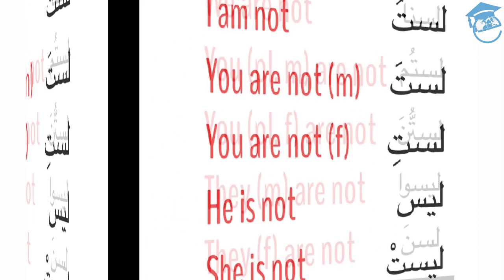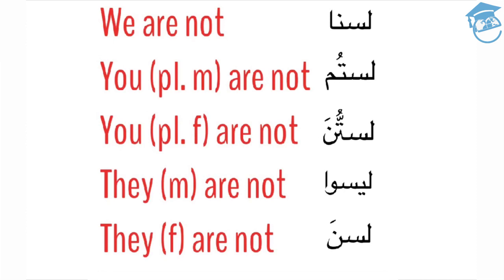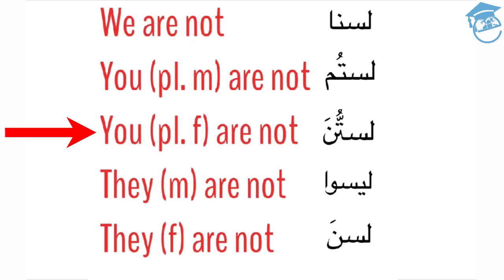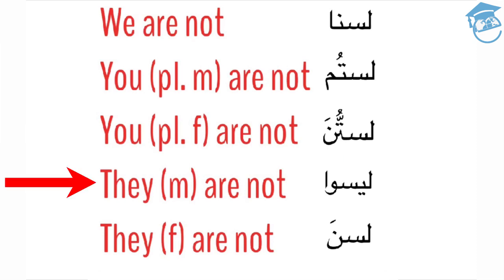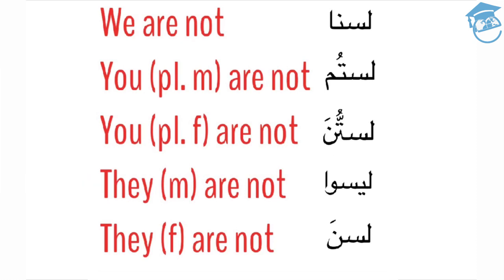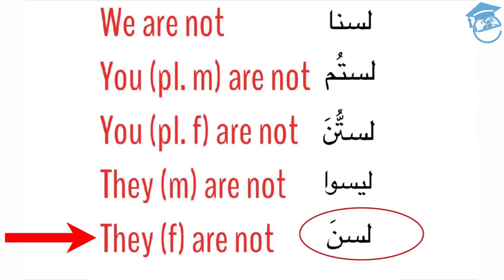With a sakun on the ta. Now let's look at the plural conjugations. To say 'we are not,' we say lasna. To say 'you, plural masculine, are not,' we say lastum. To say 'they, masculine, are not,' we say laysu — you'll notice that the aleph is silent. And finally, to say 'they, female, are not,' we say lasna.